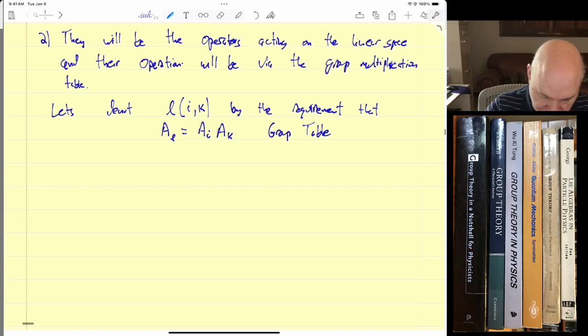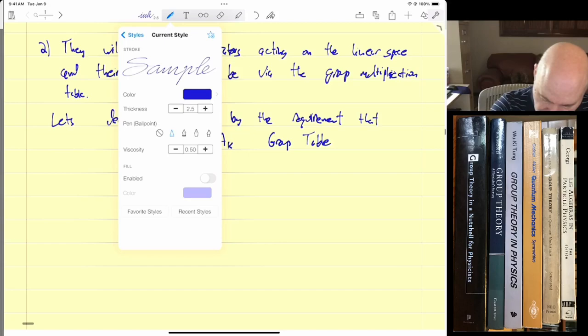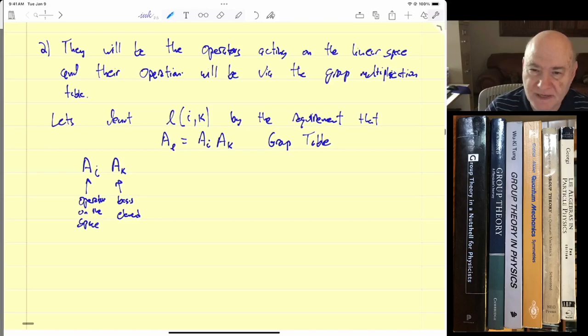Now, we define, if we're treating them as operators, A_i operating on A_k. So this is an operator. We define an operator on the space, and this is the basis element of the space. And as you know, if we define an operator on every basis element, we've also defined it on every element of the space. And this is defined by A_L(i,k).